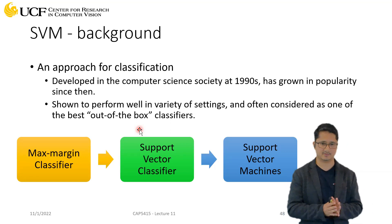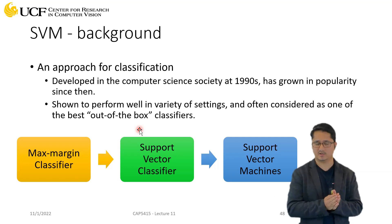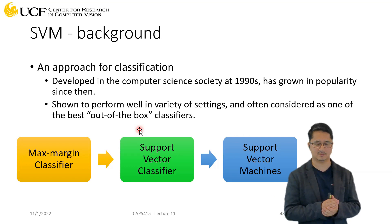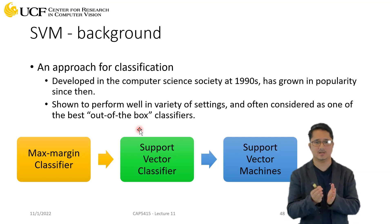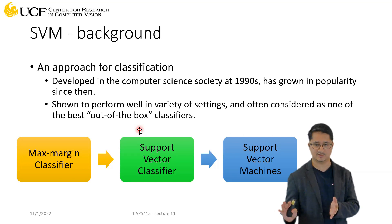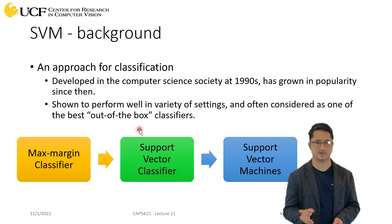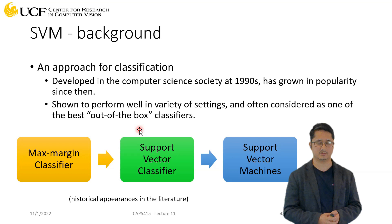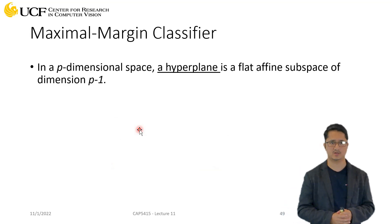The timeline goes: first we have the maximum margin classifier, then the support vector classifier, then support vector machines — all related because in all of them we are trying to learn a decision boundary while maximizing the margin. We'll cover each in three separate segments, starting with the maximum margin classifier.